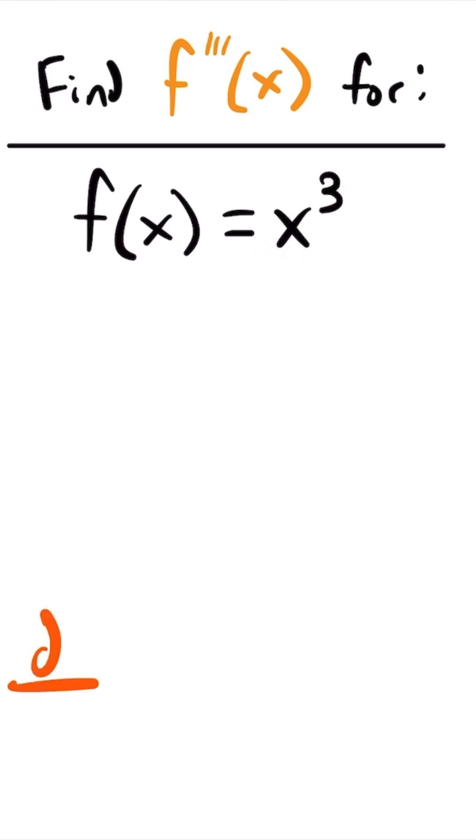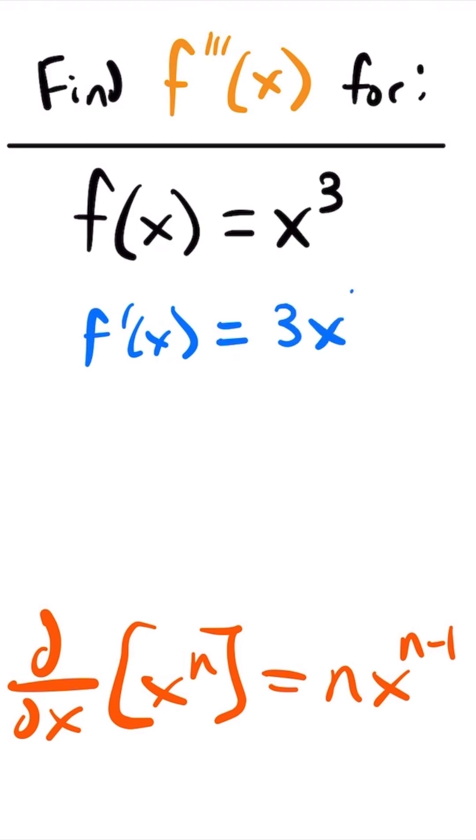The power rule says that the derivative of x to the power of n is equal to n times x to the power of n minus 1. So if we use that for this function where n is equal to 3, we will have that f prime of x is equal to 3 times x squared.